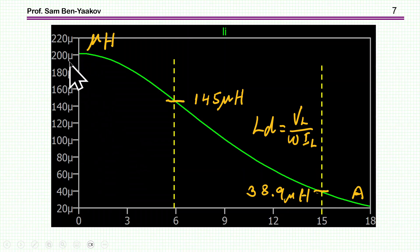As expected, it is 200 microhenry, and I've marked two points that I'm going to use later to compare to other runs. One is at 6 amp, approximately 6 amp, which is 145 microhenry, and this one is 38.9 microhenry at 15 amp for this particular inductor. Again, the inductance is measured or calculated as the voltage over 2 pi f, the current, and these are AC components.